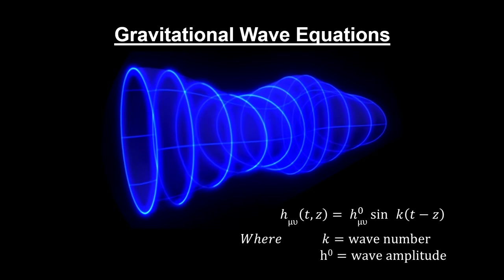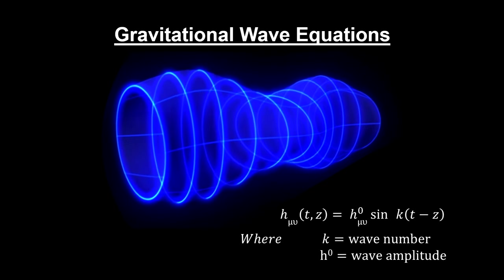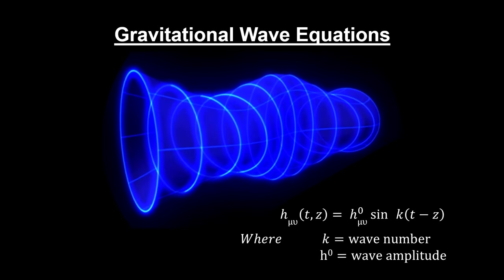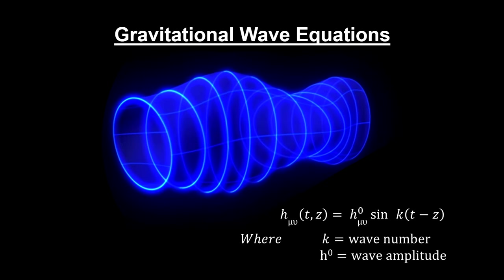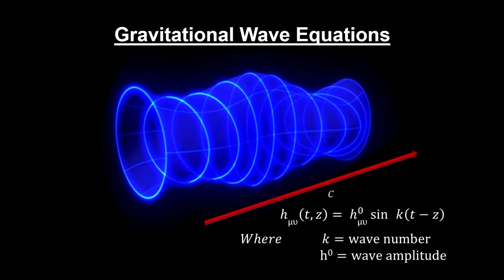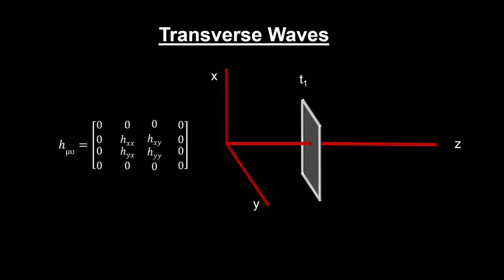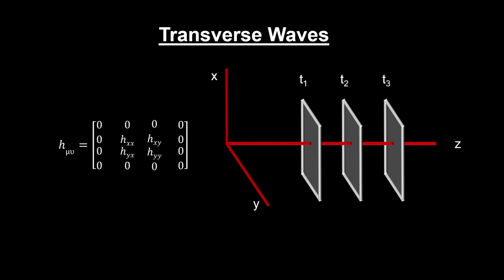Solutions to Einstein's equations show that a gravitational wave's metric oscillates sinusoidally, just like light, and it travels at the same speed as light. As the wave moves down the Z-axis, planes at different times experience different values for the metric used to measure distance on the plane. This makes the wave a transverse wave, just like light.